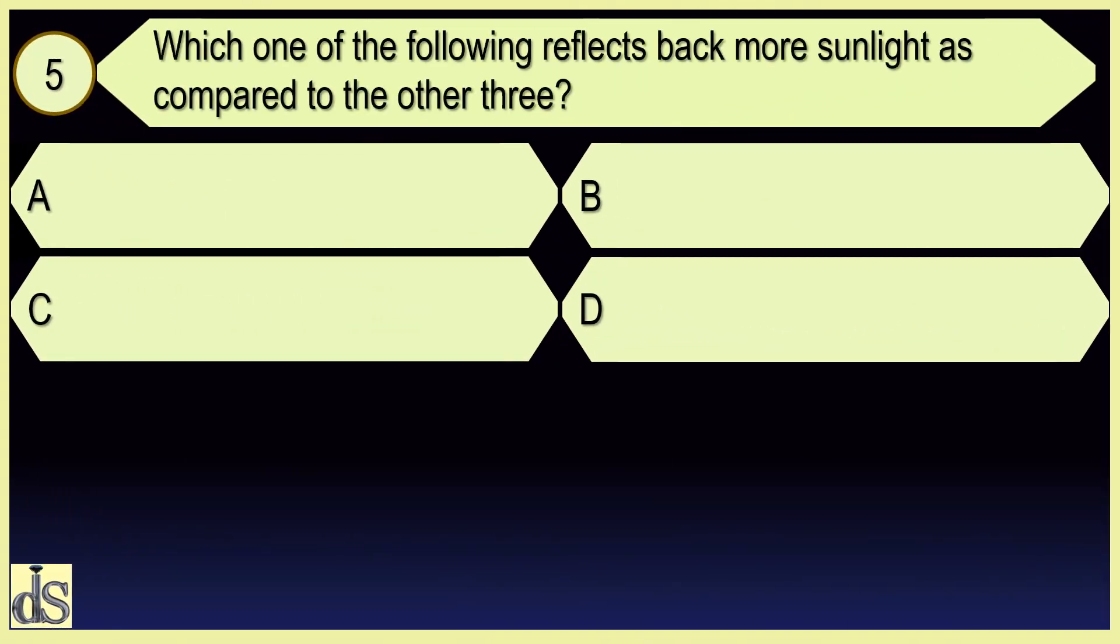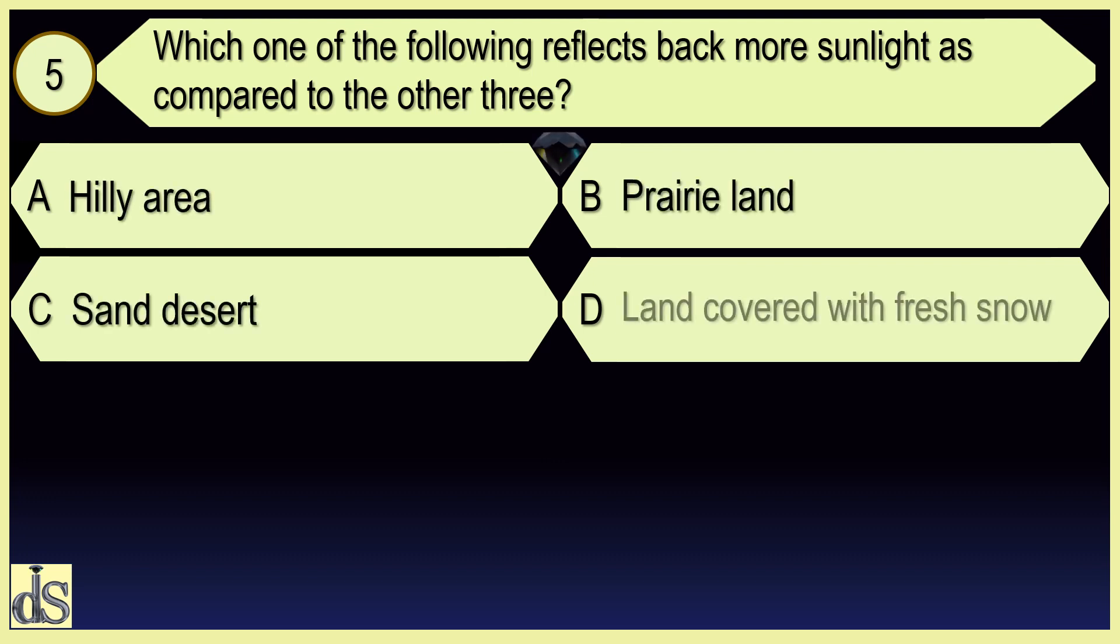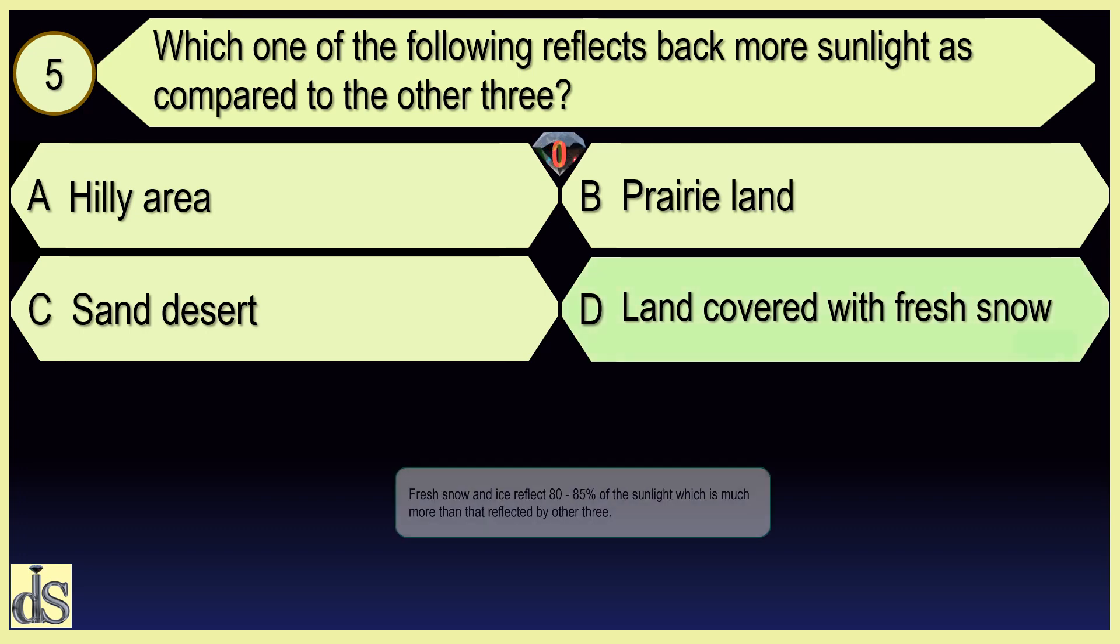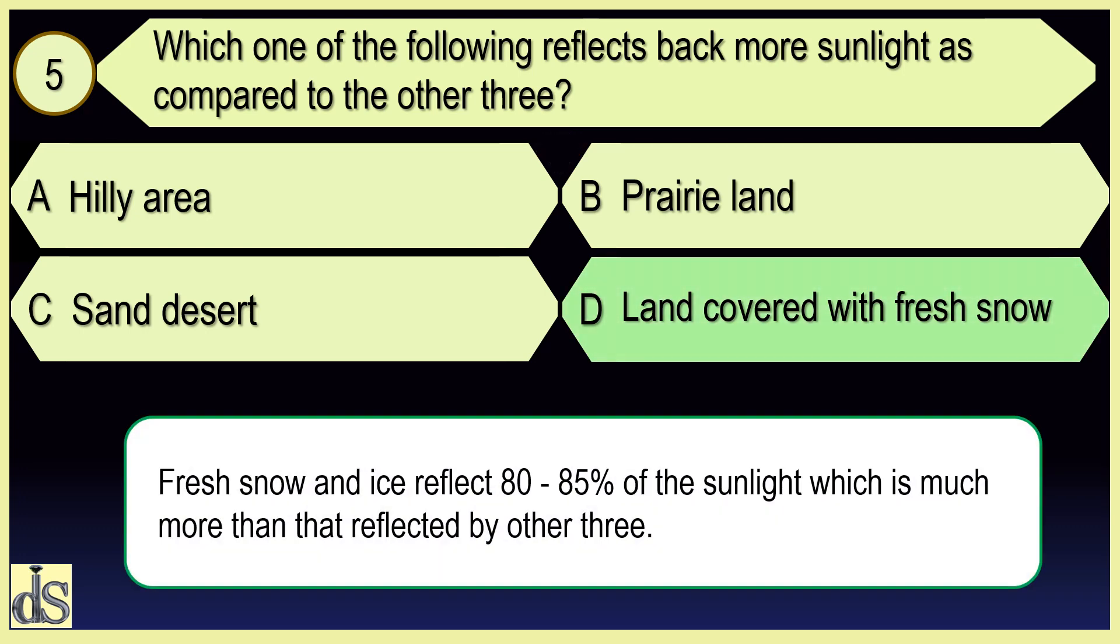Which one of the following reflects back more sunlight as compared to other three? Land covered with fresh snow.